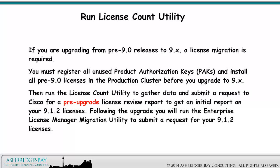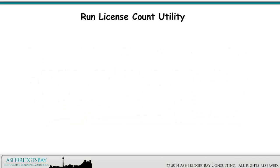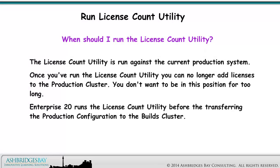Following the upgrade, you will run the Enterprise License Manager Migration Utility to submit a request for your 9.1.2 licenses. When should I run the License Count Utility? The License Count Utility is run against the current Production System. Once you have run it, you can no longer add licenses to the Production Cluster — you don't want to be in this position for too long. Enterprise 20 runs the License Count Utility before transferring the Production Configuration to the Builds Cluster.